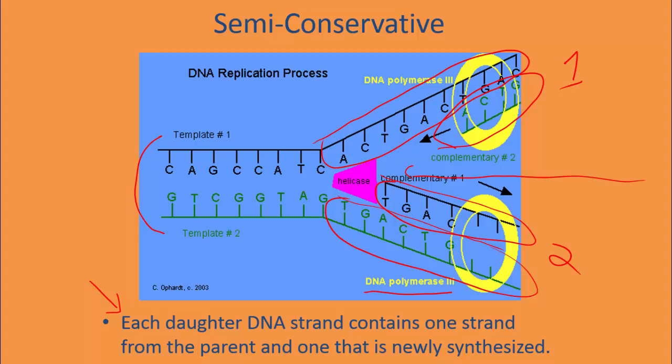In our two daughter DNA molecules, each one has one original strand combined with a new strand to make the full helix or ladder. Semi-conservative simply means each copy contains one leg of the DNA that was originally there and one that was newly added on to it.